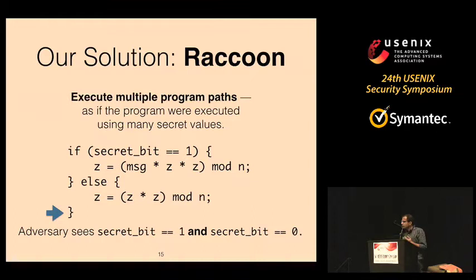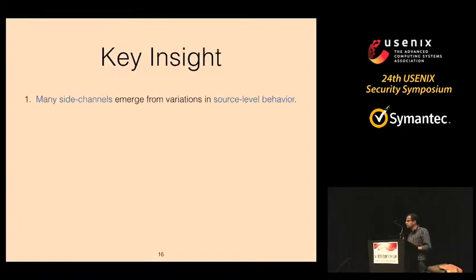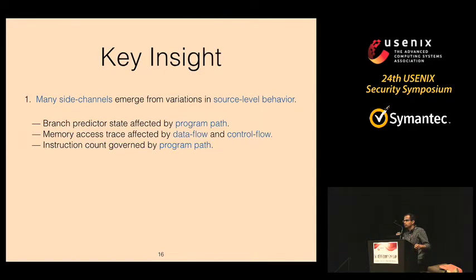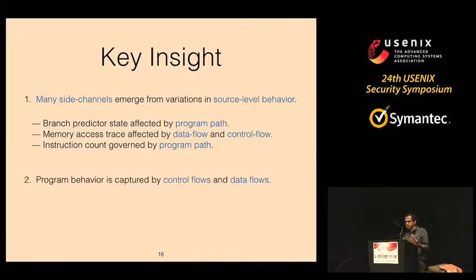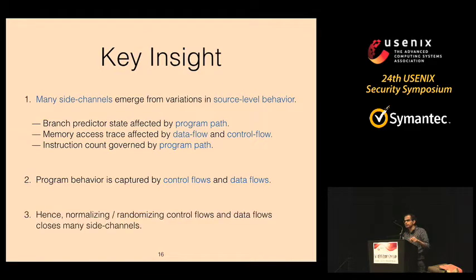The reason this works and can close more than a handful of side channels is the key insight that many side channels that leak application-level behavior emerge due to variations in source-level behavior. For example, your branch predictor state depends on the specific program paths taken, and your memory address trace depends on the functions called or memory locations referenced. This source-level behavior can be expressed concisely using control flows and data flows. If you normalize or randomize your control flows and data flows, you can subsequently close many of these digital side channels.